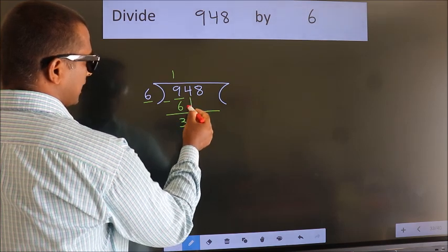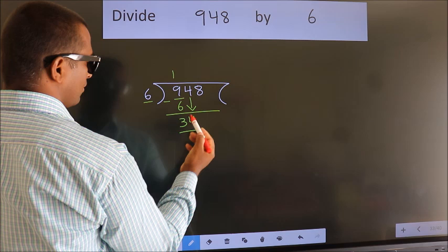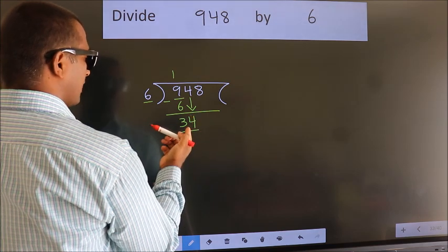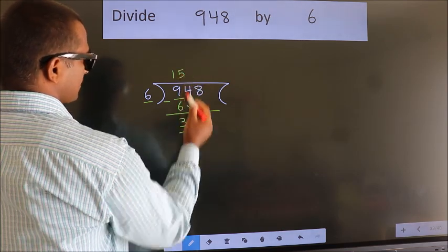After this, bring down the beside number. So, 4 down. So, 34. A number close to 34 in 6 table is 6 fives 30.